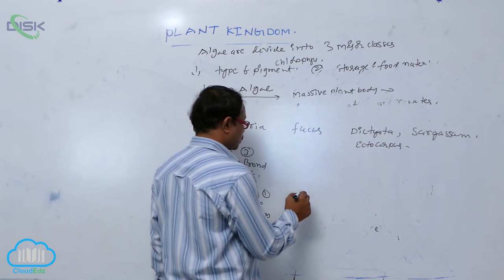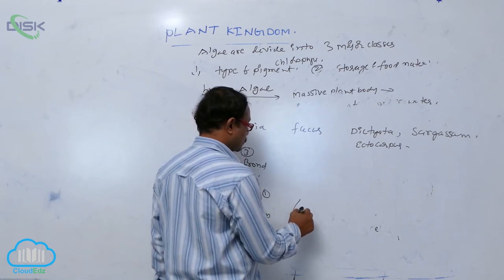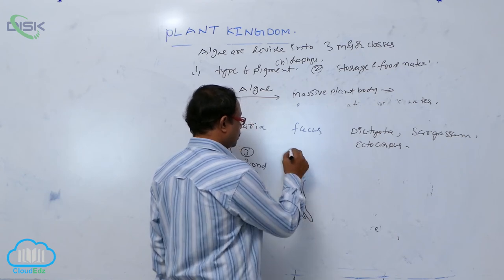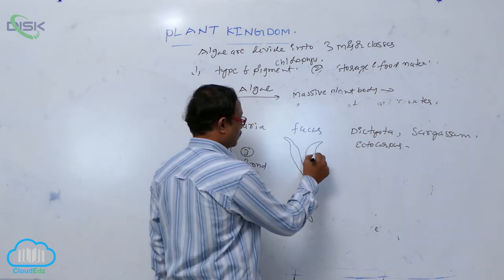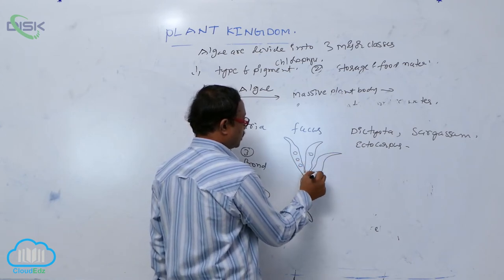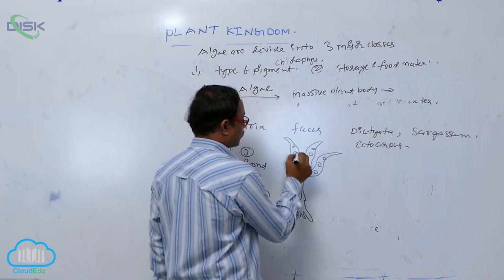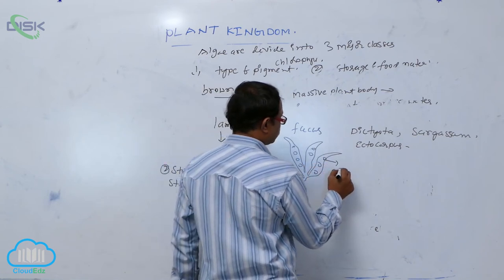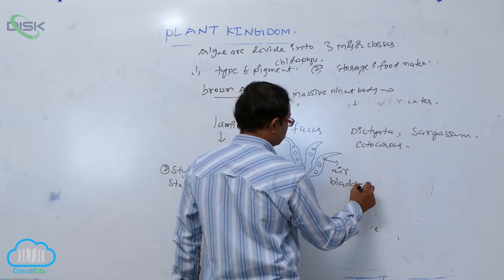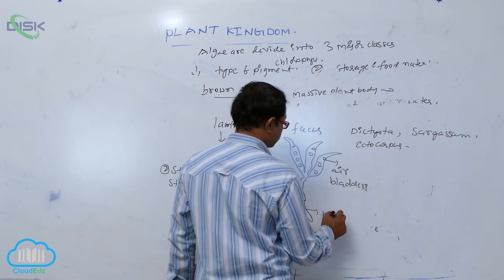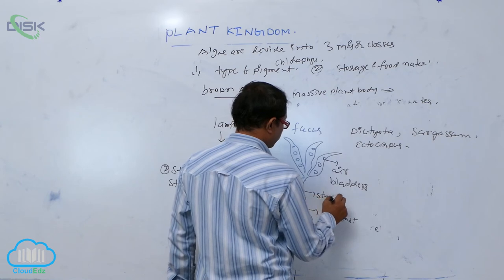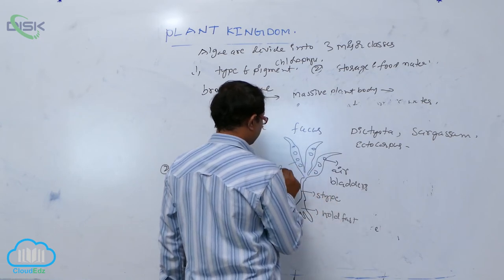Fucus also has a holdfast. Above the stipe, it produces a frond, and the frond produces branches. Inside the frond there are air bladders. So Fucus has a holdfast, stipe, and frond.